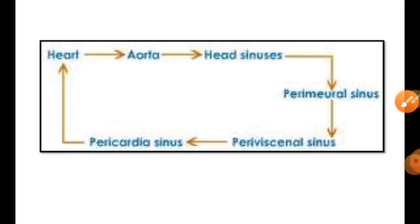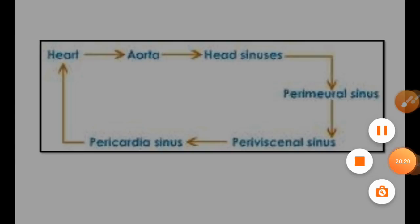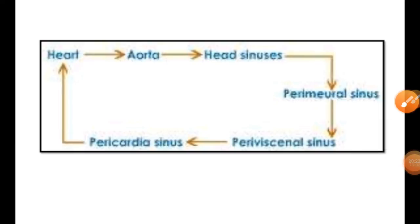This is the main mechanism of the blood circulatory system in the cockroach. You must understand all these things and try to prepare your notes clearly with the diagram.